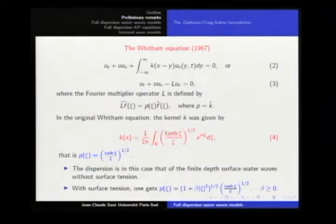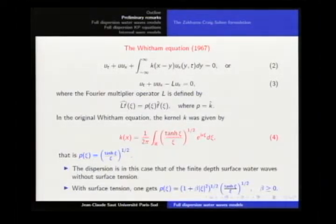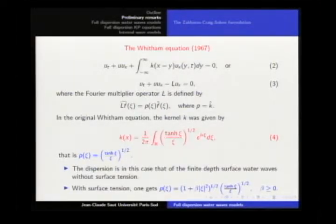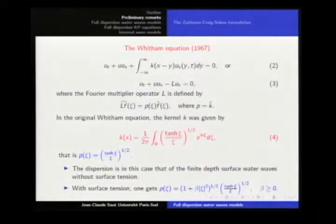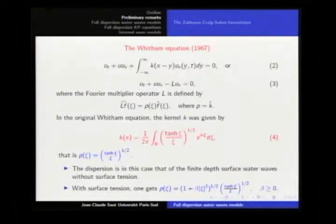Now the Whitham equation. Whitham derived it formally a long time ago with the idea that the KDV dispersion is too strong with respect to the dispersion of the water wave, and he wanted an equation where you keep somehow the dispersion of the water wave. He introduced this equation with a kernel which is essentially the phase velocity of the water wave. With surface tension, you get a much more dispersive equation, behaving like |ξ|^{1/2} for large frequencies. This is why it has some connection with the previous toy model.